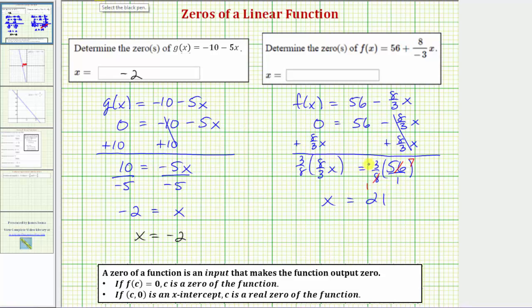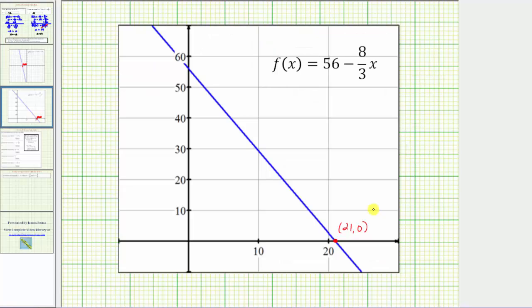So the zero of f(x) is x equals 21. If we look at the graph of the function f(x), notice how it does intersect and cross the horizontal or x-axis at x equals 21.